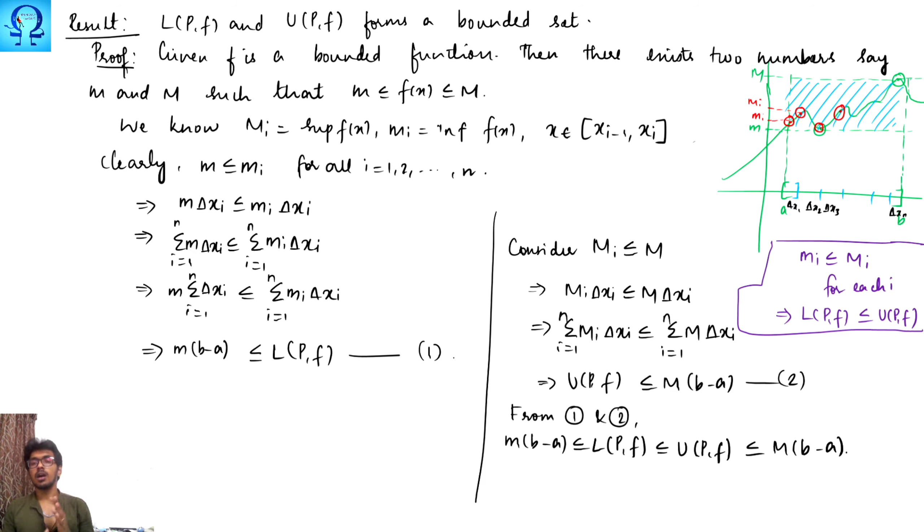And when you take the supremum over all possible partitions, your LPF and UPF becomes equal if the function is Riemann integrable, and that gives you another interesting result. Let me write that as a remark. If f is Riemann integrable, then m times b minus a less than or equals integral a to b f of x dx less than or equals big M times b minus a, where the small m and big M are in the usual sense that is done in this result. Thank you.